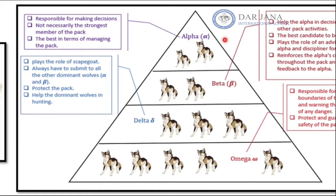Another example is wolves. Wolves, both male and female, are ranked. The top-ranked animal is the alpha wolf, and the lowest-ranked is the omega wolf. The alpha wolves, being the highest-ranked, are responsible for making decisions — they are the strongest in the group.